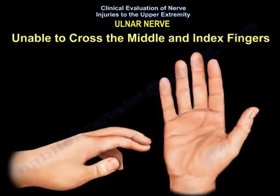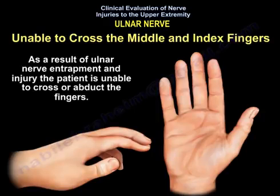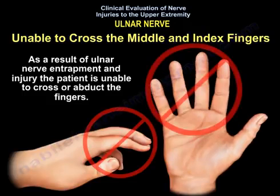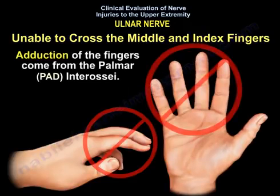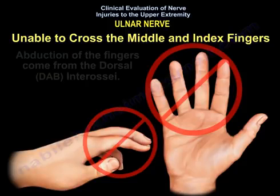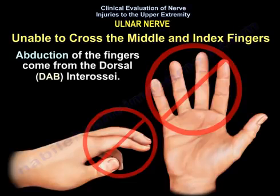As a result of ulnar nerve entrapment and injury, the patient is unable to cross or abduct the fingers. Adduction of the fingers comes from the palmar interossei, and abduction of the fingers comes from the dorsal interossei.